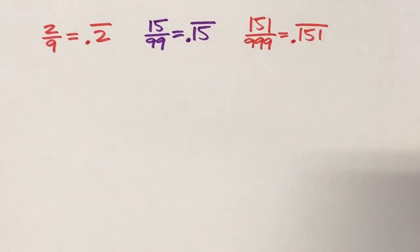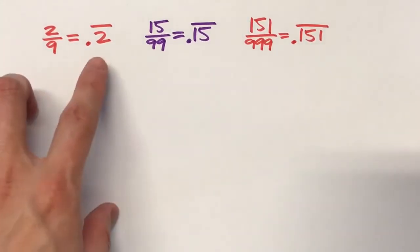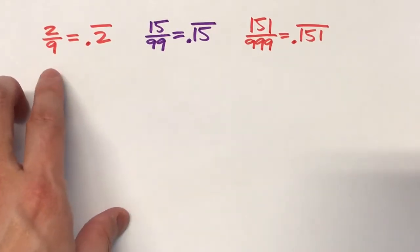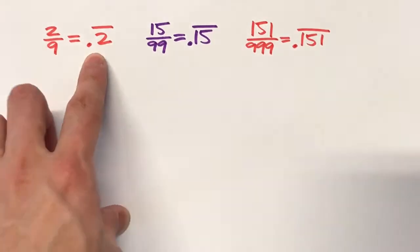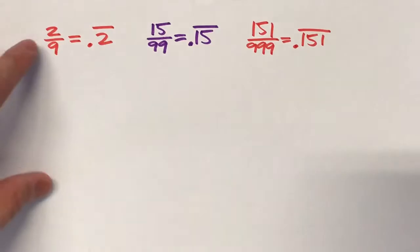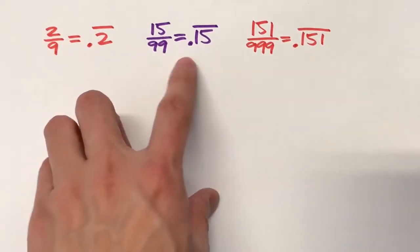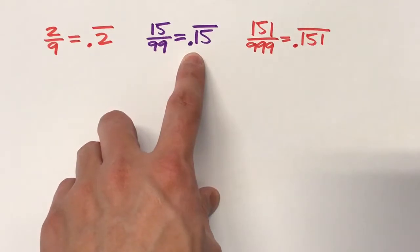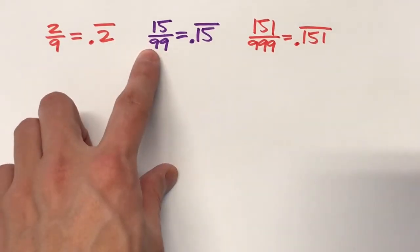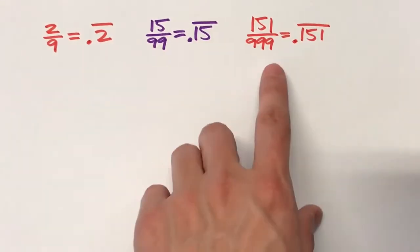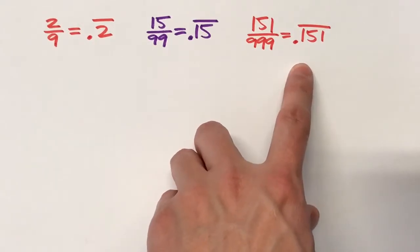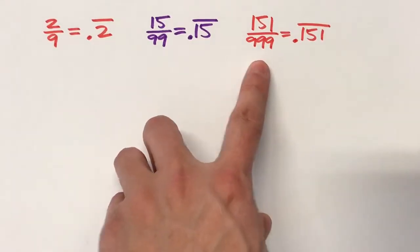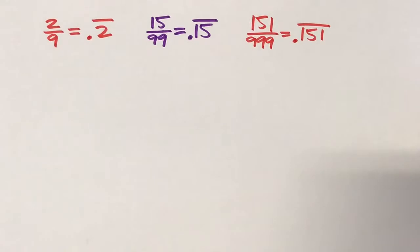So on Friday, we learned some patterns with repeating decimals. We learned that any repeating decimal where there's only one digit repeating, the equivalent fraction has a 9 as a denominator. If we have a repeating decimal where two digits are repeating, the denominator has 99. And if we have a repeating decimal where there are three digits repeating, the denominator is 999.